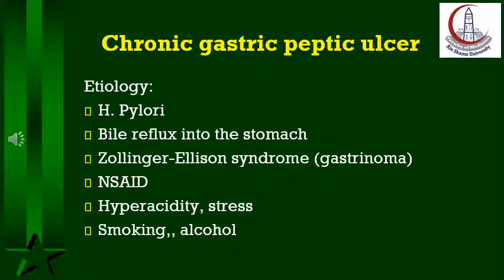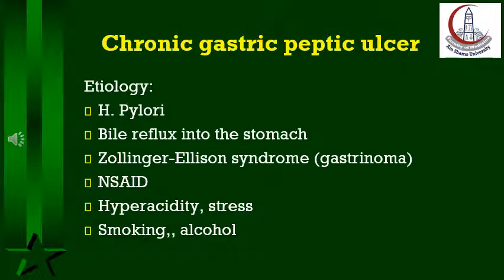Damage to the gastric mucosal barrier appears to be the most important factor for the development of chronic gastric peptic ulcer, which can be secondary to various listed causes. Malignancy should be considered in all ulcers of the stomach, no matter how small or innocent-looking during endoscopy. Eight biopsies should be taken from the edge of the ulcer. Follow-up endoscopy is repeated after treatment of benign ulcers, and if still not healed, re-biopsy is indicated.